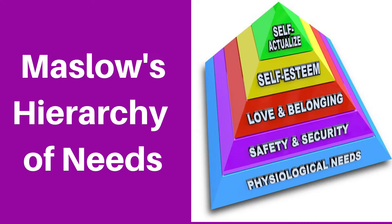The next level up on the pyramid is that of safety and security. This is the level that Maslow believed people tried to gain the ability to feel safe from harm. He postulated that people in the early days were more focused on this than we are in modern day society, because the risk of being attacked by a saber-toothed tiger was more possible at that point in time than what we generally encounter today. Some people would argue that.